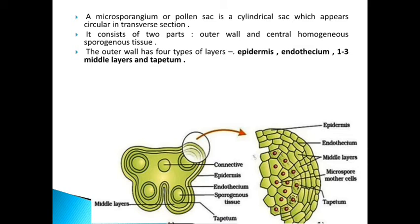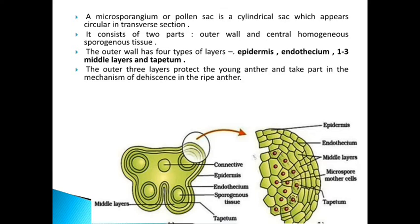The outer wall has four types of layers. The outermost is the epidermis, then endothecium, then 1 to 3 middle layers, and finally the tapetum. You may see a zoomed portion of the diagram showing epidermis, endothecium, and middle layer clearly. These outer three layers — epidermis, endothecium, and middle layers — protect the young anther and take part in the mechanism of dehiscence in the ripened anther.